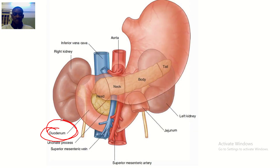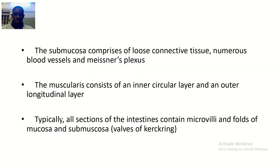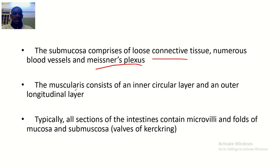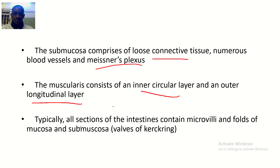The submucosa comprises loose connective tissue, numerous blood vessels, and Meissner's plexus. The muscularis consists of an inner circular layer and an outer longitudinal layer.